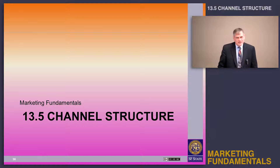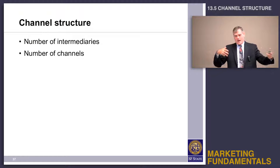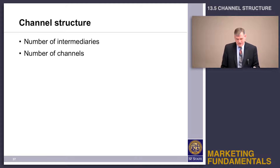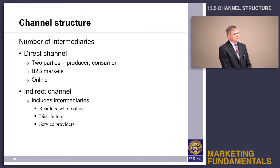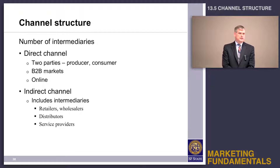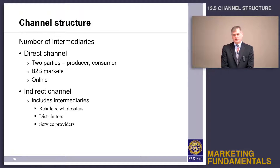The next thing I want to talk about is channel structure, or just how many intermediaries you should have in the channel. We talked before that the absolute minimum channel is a producer and a consumer. That's called a direct channel.